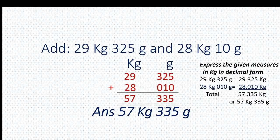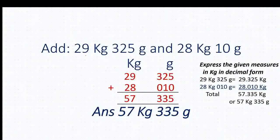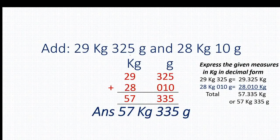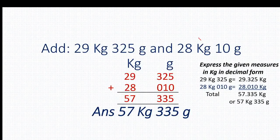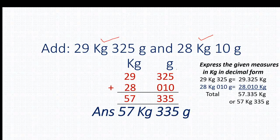Moving to the next page. Here our question is 29 kg 325 gram and 28 kg 10 gram. Here we have 2 addends. Our first step is to write the units — I have written the units. After that, arrange these numbers in the column. I have arranged the numbers in the column.